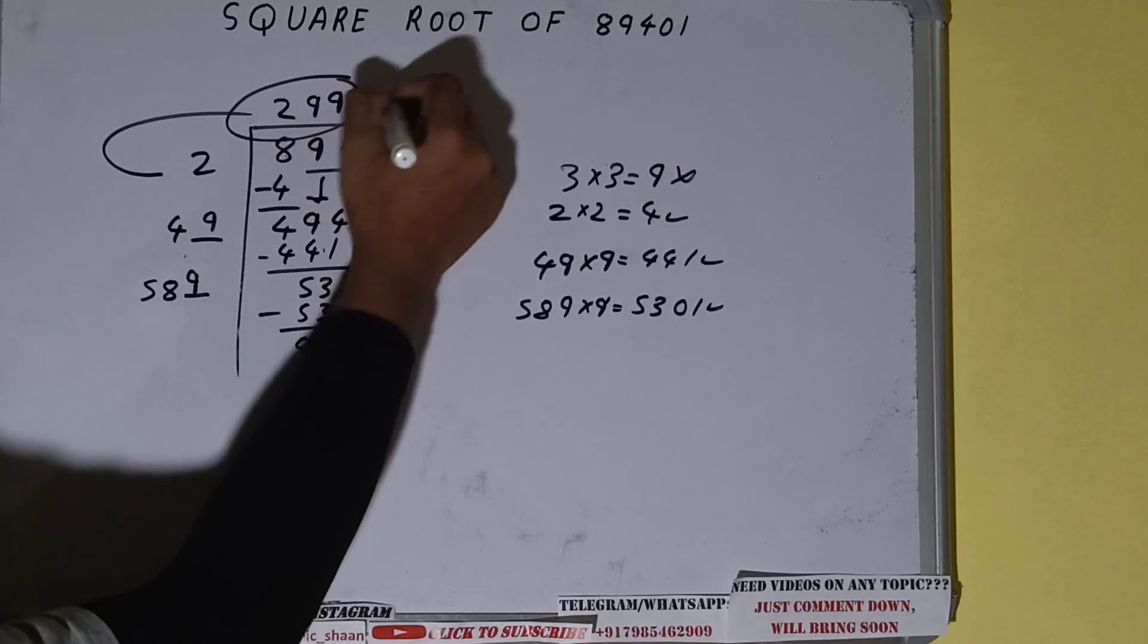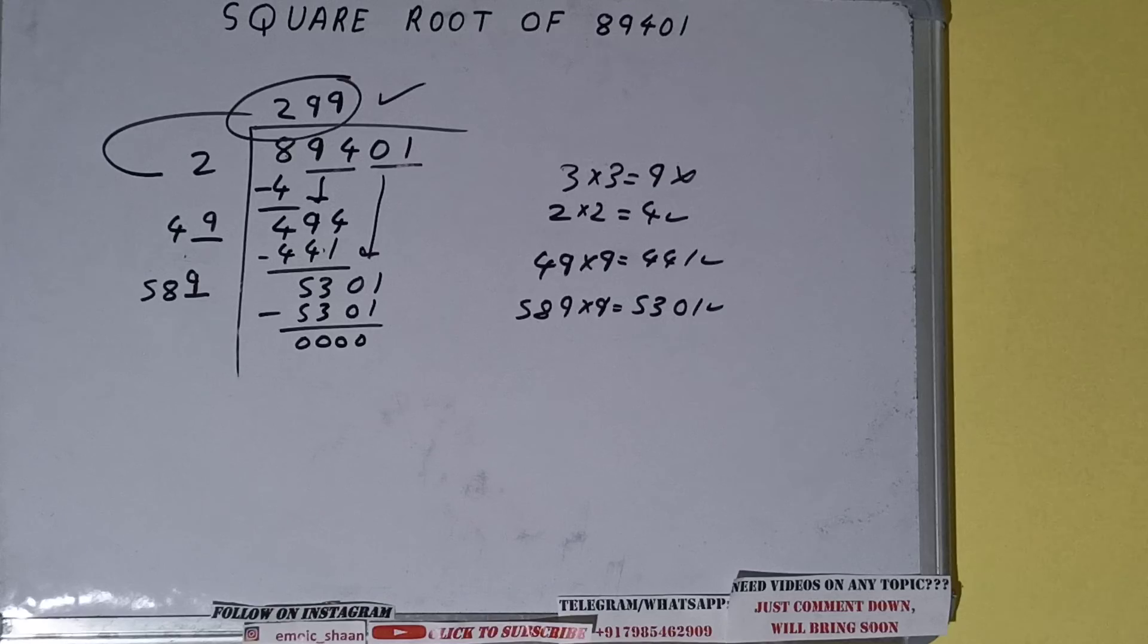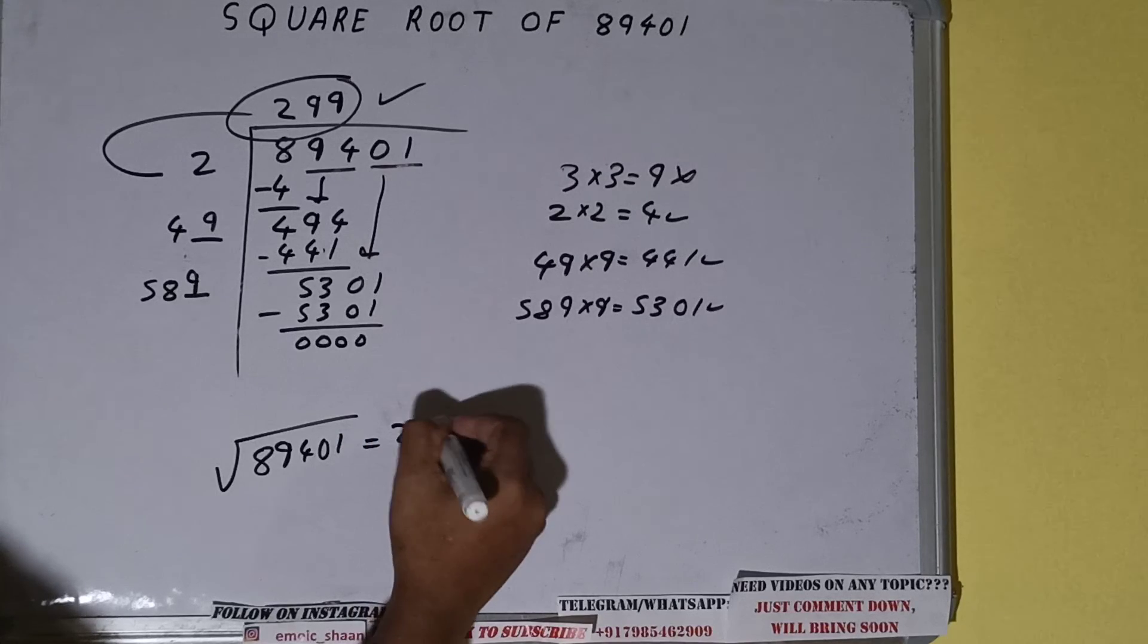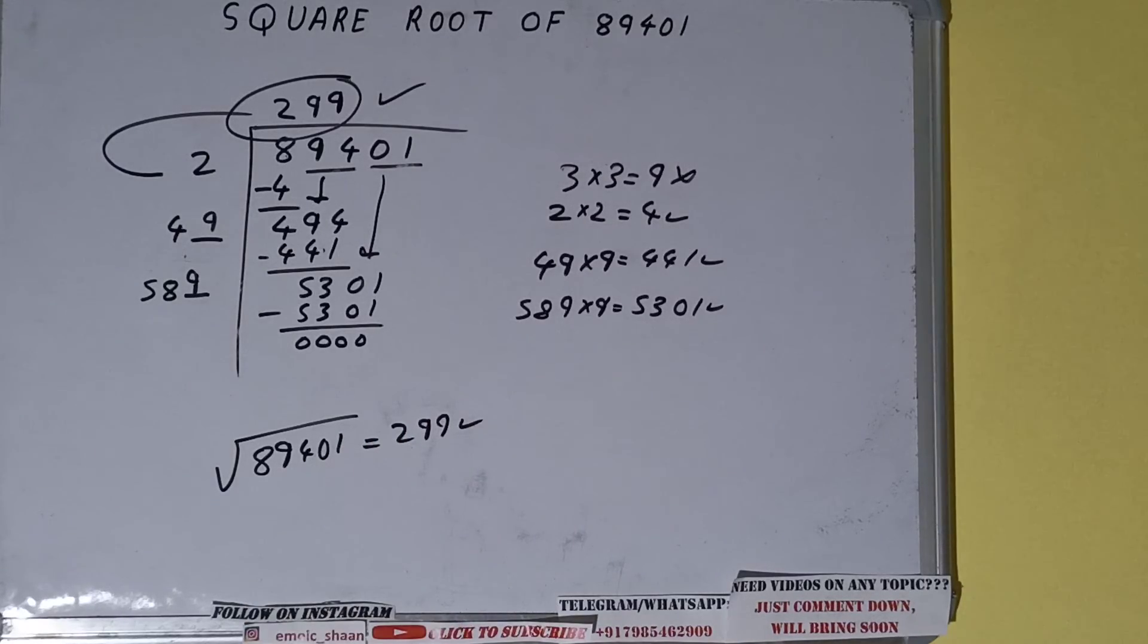Once we get 0, whatever we have in the quotient will be the answer. That is 299. So square root of 89401 will be 299. That's it.